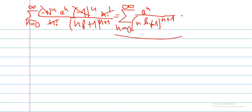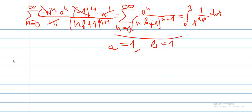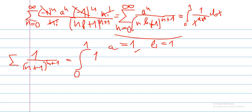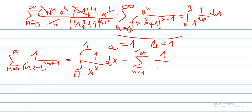But we can get something pretty interesting from our result. This was an integral of 1 over x to the ax to the b. If we let a equals 1 and b equals 1, we get the sum of 1 over (n plus 1) to the n plus 1, which equals the integral from 0 to 1 of 1 over x to the x. Swapping the index, this sum from n equals 1 to infinity is 1 over n to the n.